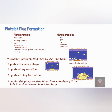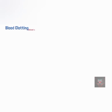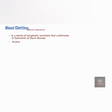A platelet plug is very effective in preventing blood loss in small vessels; it can stop blood loss completely if the hole in the blood vessel is not too large. The final step in hemostasis is blood clotting, also known as coagulation. It is a series of enzymatic reactions that culminates in the formation of fibrin threads. This reaction, known as the coagulation cascade, involves several substances known as clotting or coagulation factors. Most clotting factors are identified by Roman numerals that indicate the order of their discovery, and not necessarily the order of their participation in the clotting process.